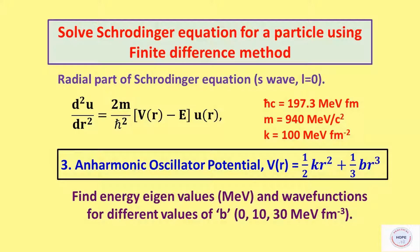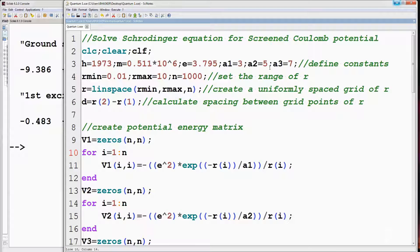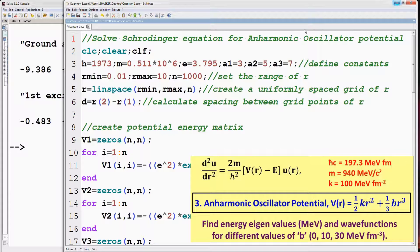Now we move on to the third case, that is anharmonic oscillator potential. Here potential is given by half kr squared plus 1 by 3 br cubed. In this case, r is in femtometer and energy in mega electron volts. We have to find energy eigenvalues and wavefunctions for three different values of anharmonic constant B. Change the title, then change the values of the constants as shown in figure.